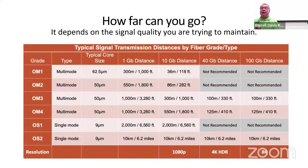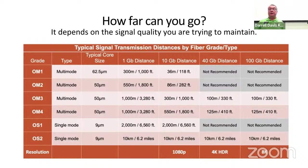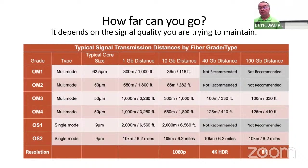How far you can go depends on the signal quality you're trying to maintain. We actually measure fiber quality and bandwidth in megahertz-kilometers — the further you go, the less bandwidth you have. Core sizes differ: 62.5, 50, down to 8 or 9 microns. You can see the relative distances for different grades of fiber — up to 10 kilometers, or 6.2 miles. For high-definition television, you're going to need OM3, OM4, and OS2 grade fibers to get that far out.